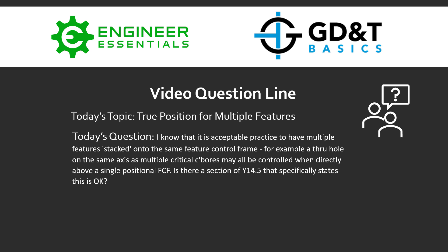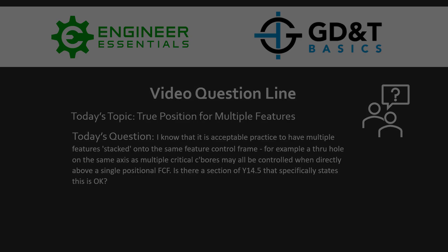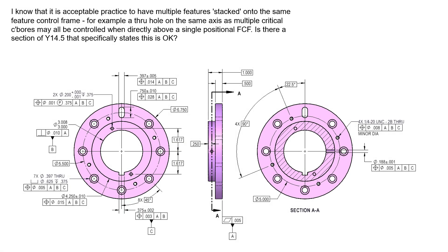Hey everybody, Jason here again with GD&T Basics. The video question of the day: today's topic is true position for multiple features. The question submitted is: I know that it's an acceptable practice to have multiple features stacked onto the same feature control frame — for example, a through hole on the same axis as multiple critical counterbore diameters may all be controlled when directly above a single positional feature control frame. Is there a section in the ASME Y14.5 that specifically states this is okay? The short answer is yes, there is a section, and I'll get to that in a moment, but I want to talk about this unique design scenario that not a lot of people know about.